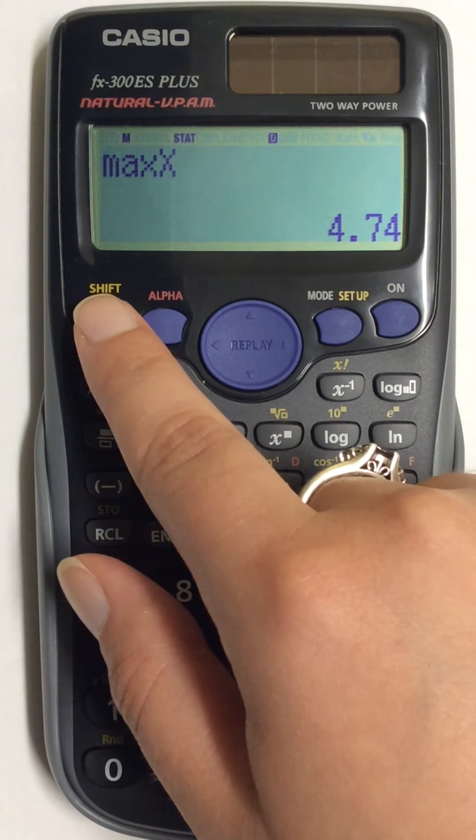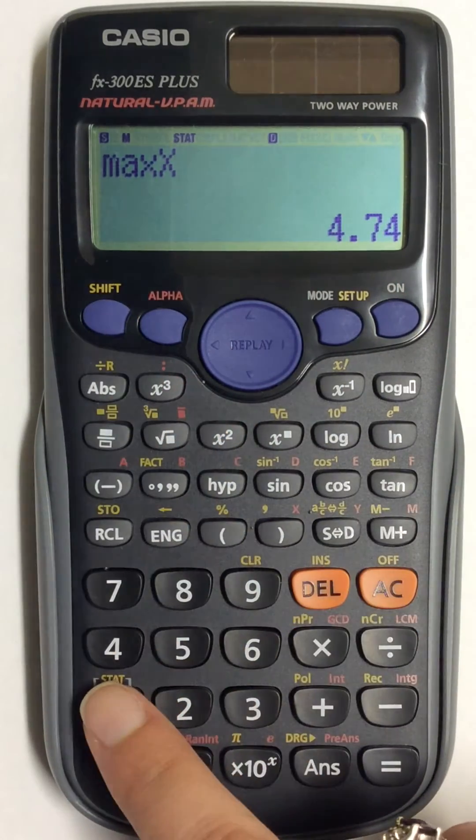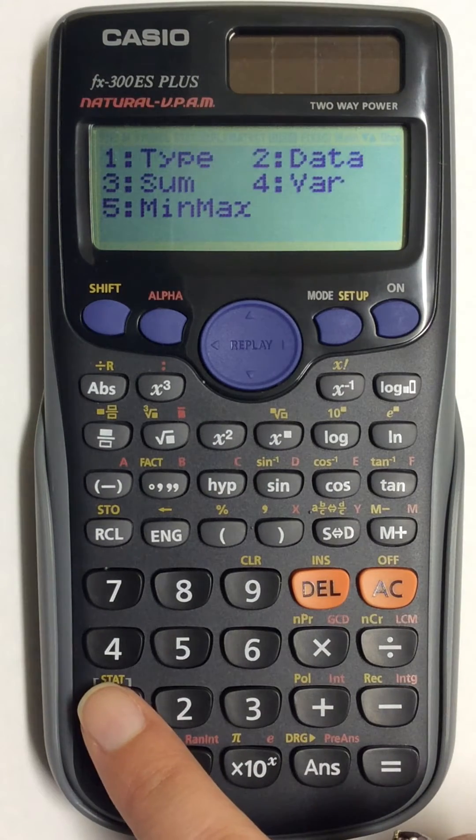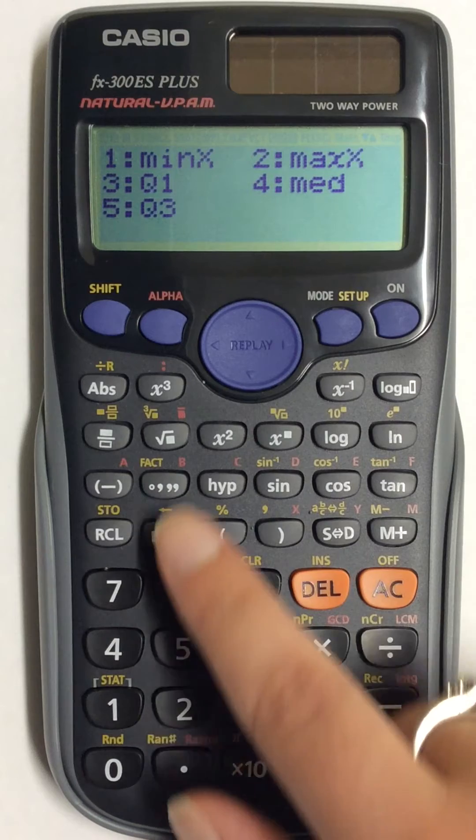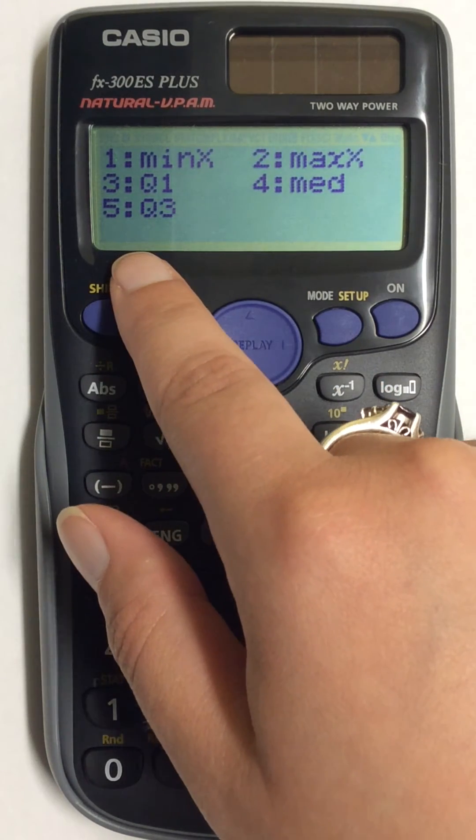To get the other numbers, you have to keep going back, hitting the Shift button, and hitting Option 1, and then going to number 5, and getting each of these values separately.